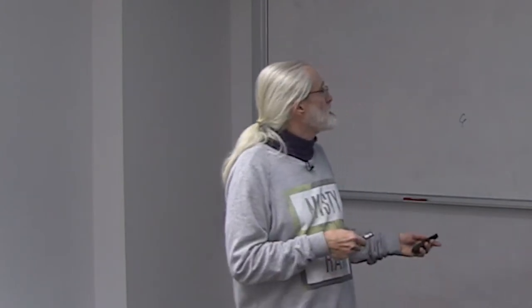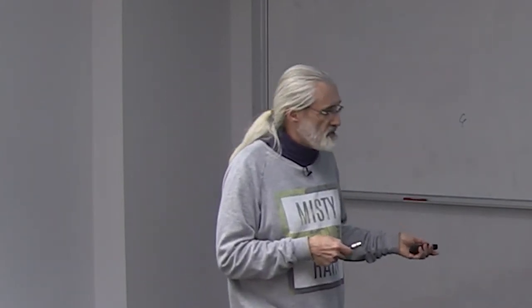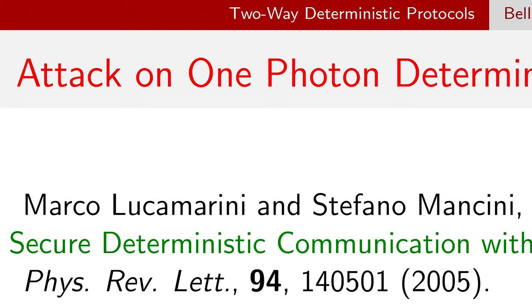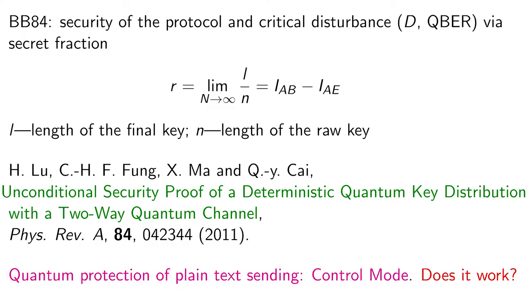Meaning that actually, because of this relation, mutual information between Alice and Eve should be 0. So we see that this elaboration of the unconditional security actually doesn't apply to our attack, and therefore cannot be a proof of unconditional security. It applies to a specific attack which was assumed in Luca Marini and Mancini's paper.